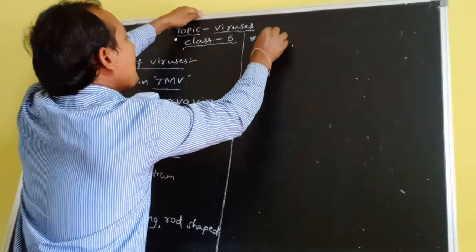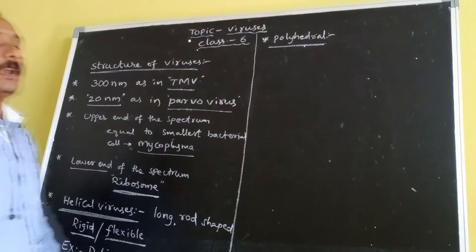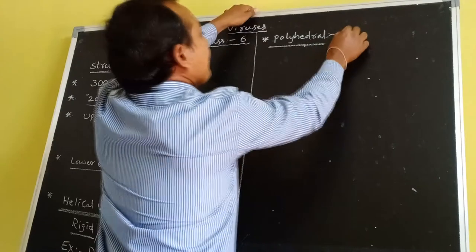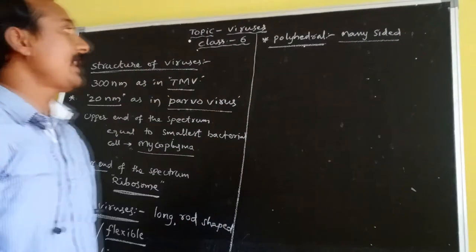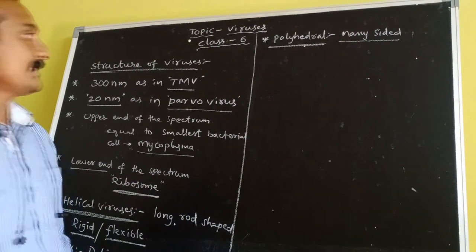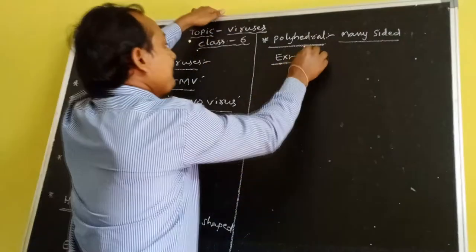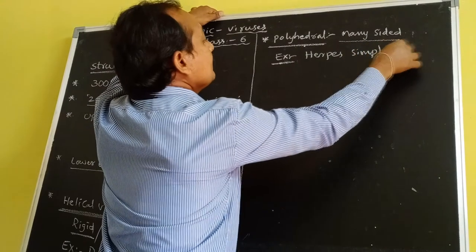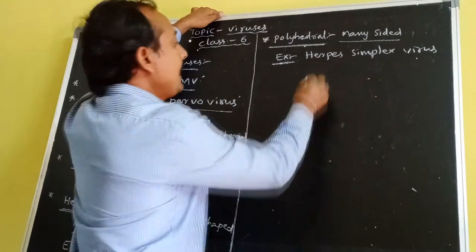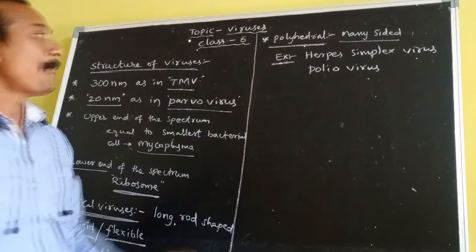The second type is polyhedral viruses. Polyhedral viruses are many-sided viruses. Examples of polyhedral viruses are Herpes simplex virus and Poliovirus.